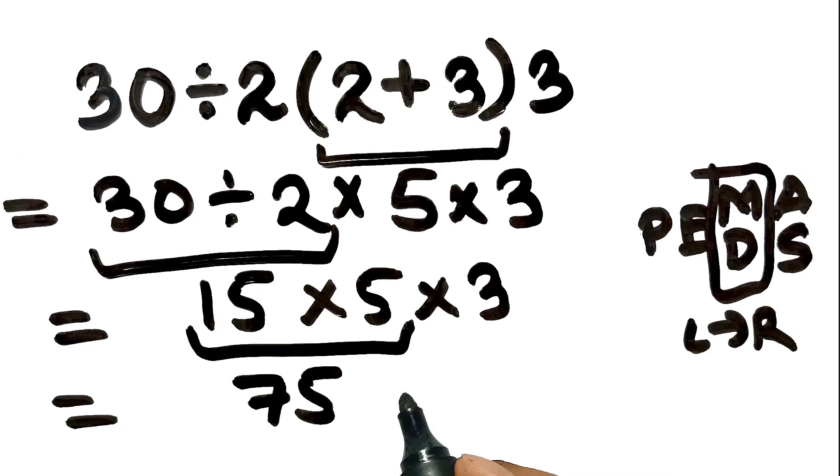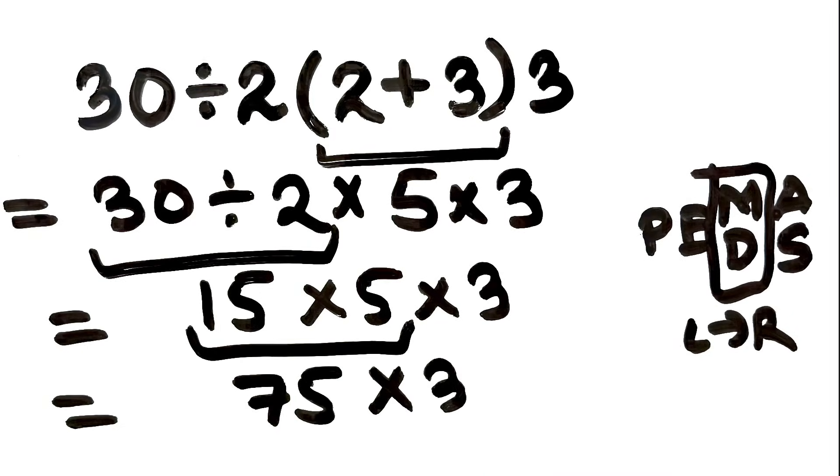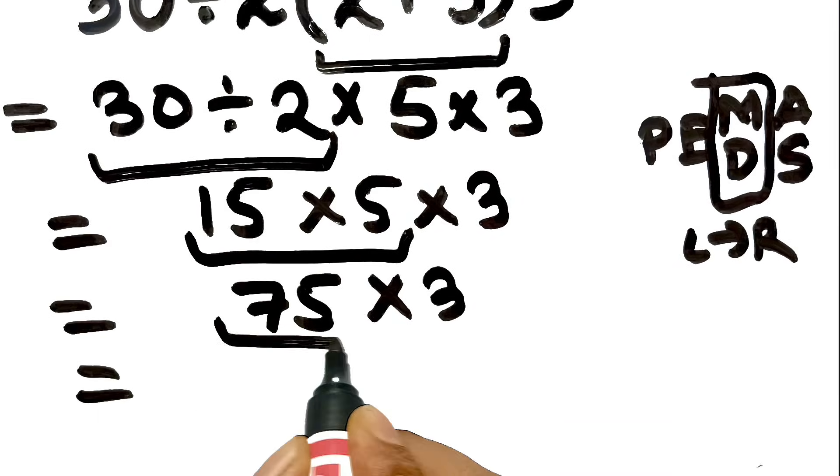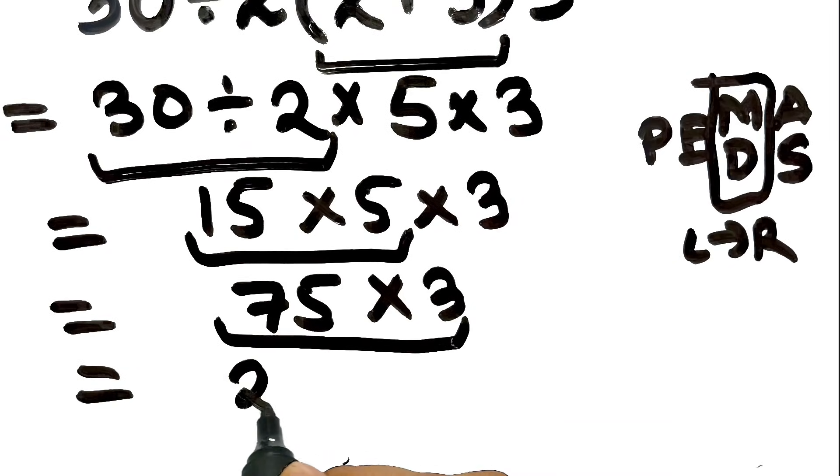Now we are left with the final step, 75 multiplied by three. And this is our final answer to this problem. The correct answer is 225.